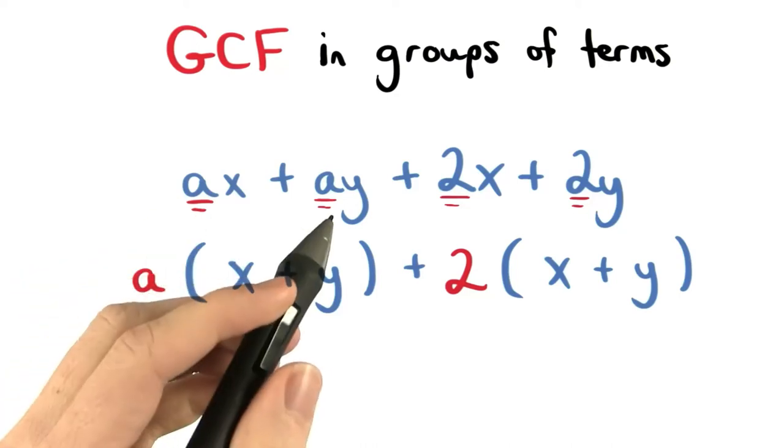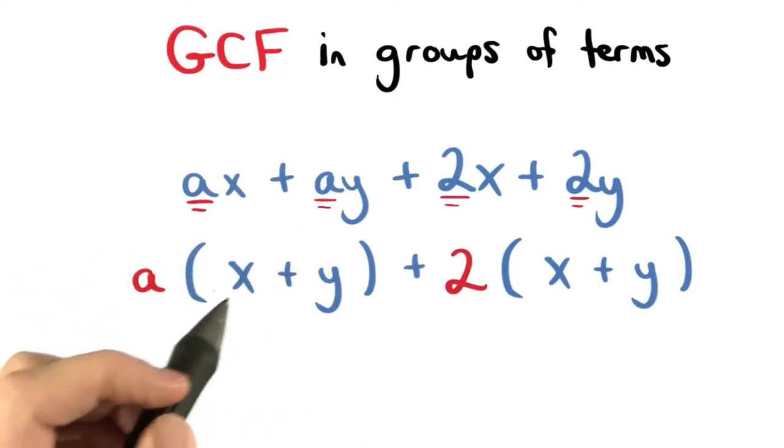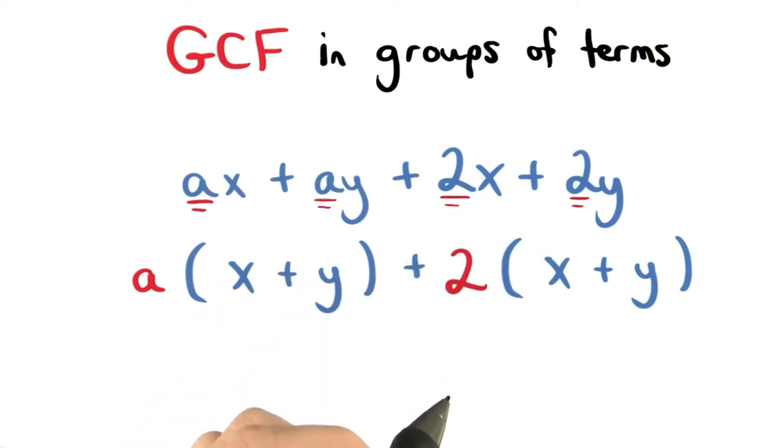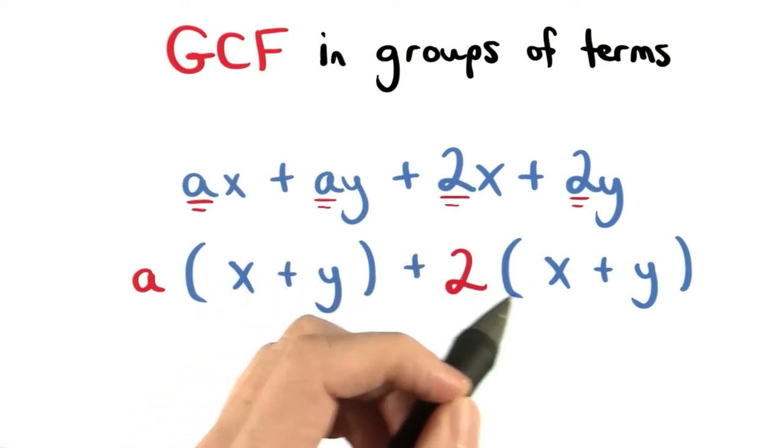We can factor an a from ax and ay, so we have a times x plus y. We can also factor a 2 from 2x and 2y, so we'll have plus 2 times x plus y.